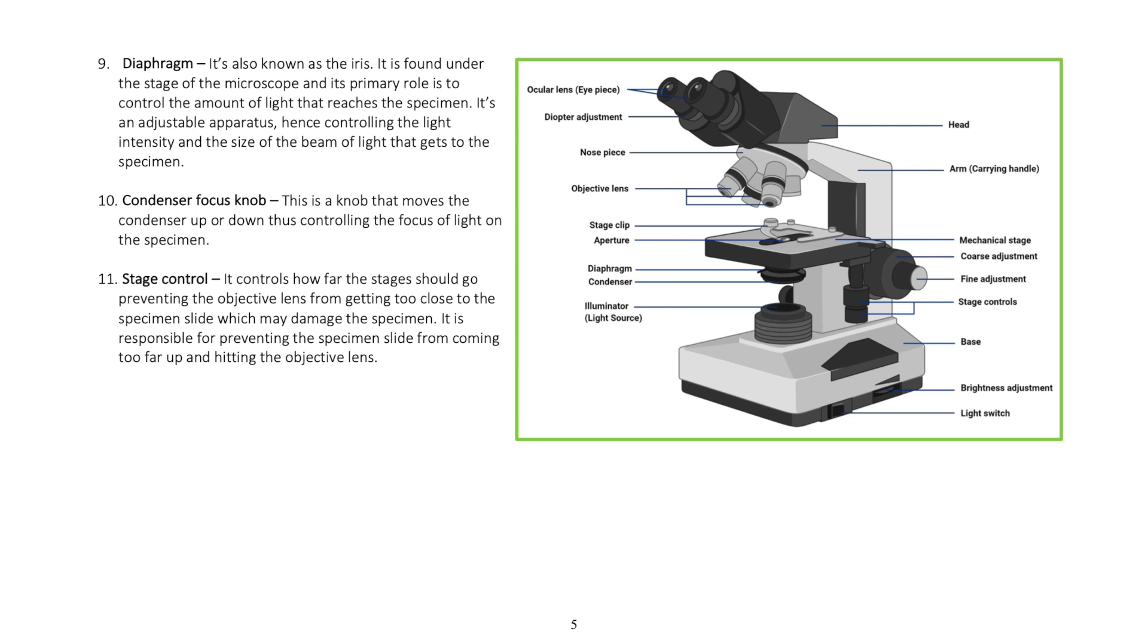Stage control controls how far the stages should go, preventing the objective lens from getting too close to the specimen slide, which may damage the specimen. It is responsible for preventing the specimen slide from coming too far up and hitting the objective lens.